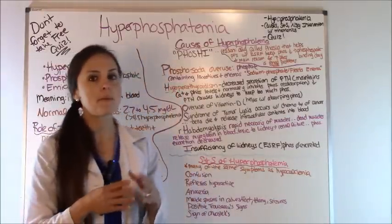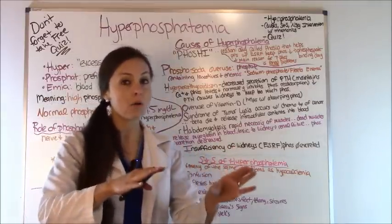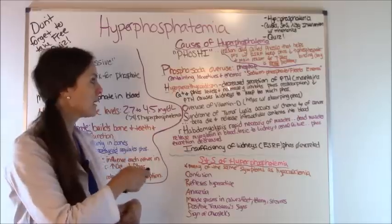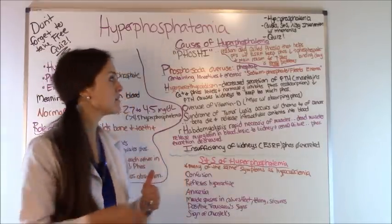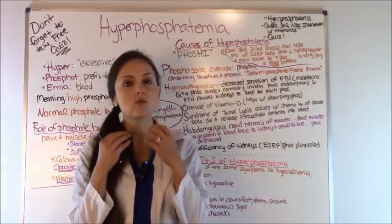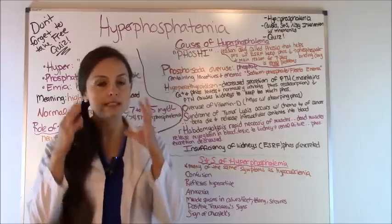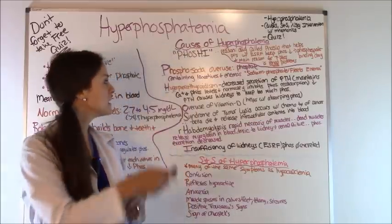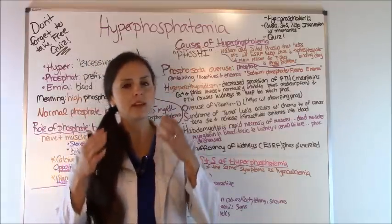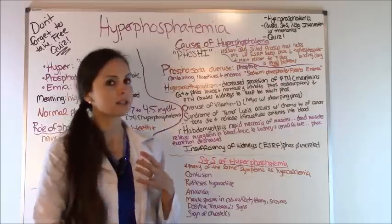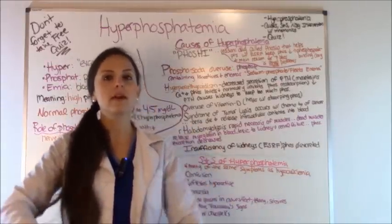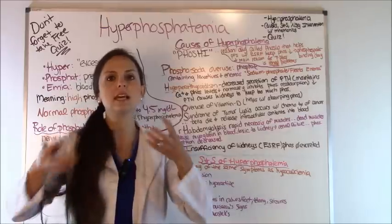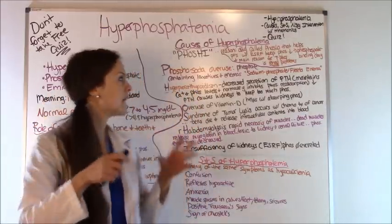H stands for Hypoparathyroidism. In hypophosphatemia we said hyperparathyroidism caused it — now this is the opposite. Hypoparathyroidism causes increased phosphate levels because the parathyroid gland releases PTH (parathyroid hormone) and that secretion is decreased. Normally your parathyroid hormone maintains your calcium and phosphate levels and inhibits the reabsorption of phosphate, keeping those levels steady. But whenever PTH is low, the kidneys start to retain all that phosphate and levels rise.